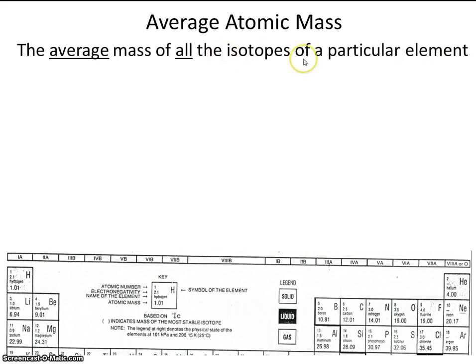Now you remember that an isotope, that's atoms of the same element that have a different number of neutrons.